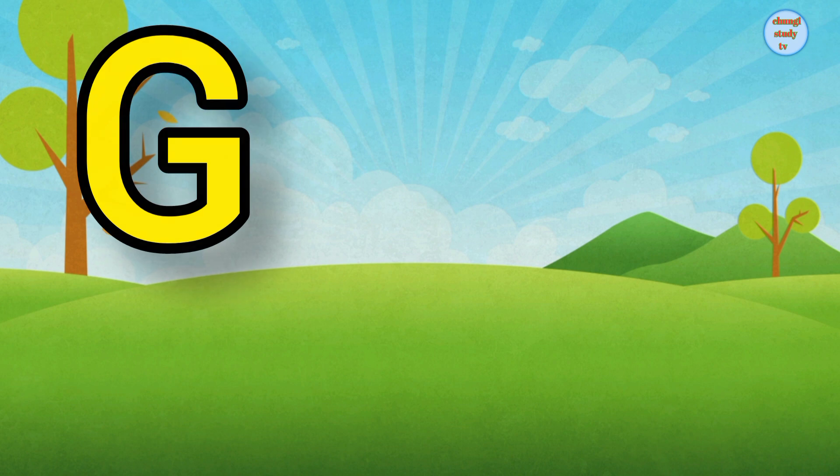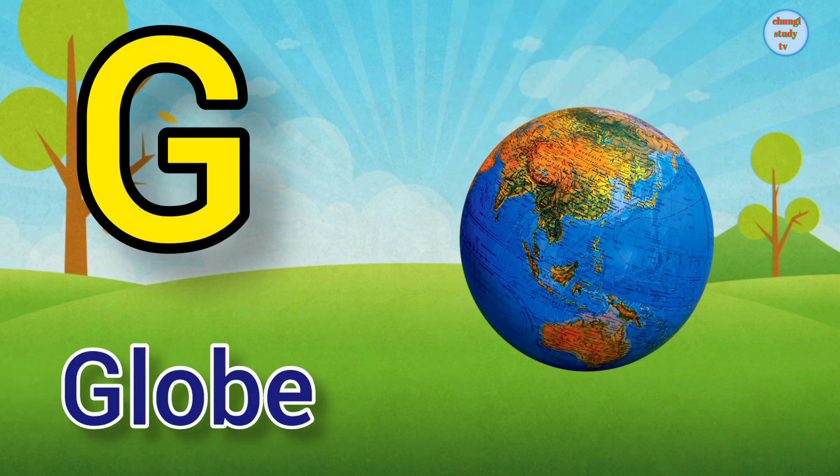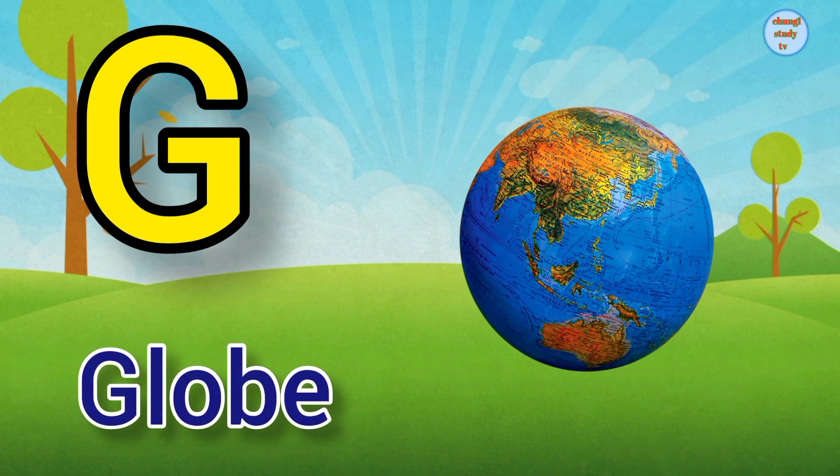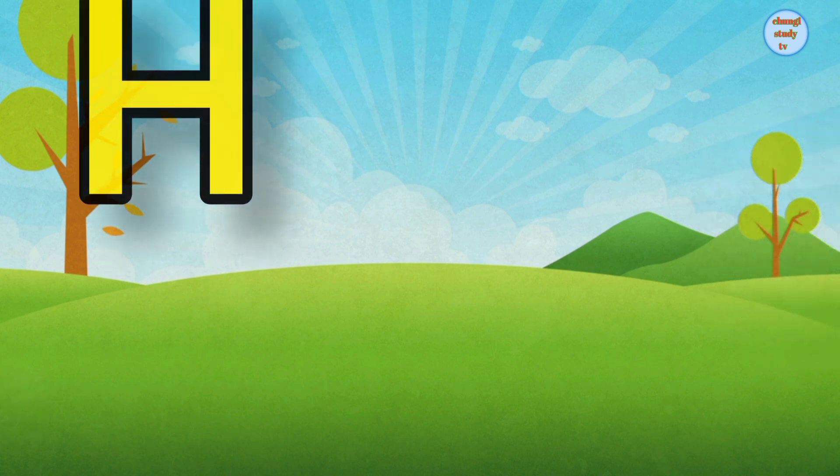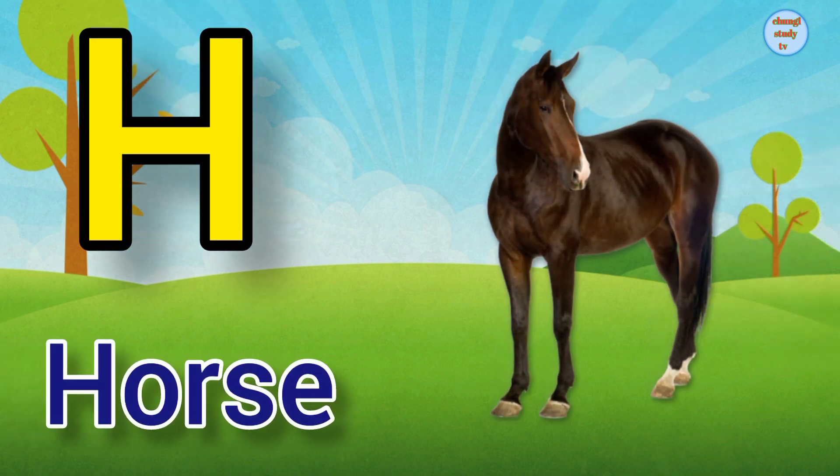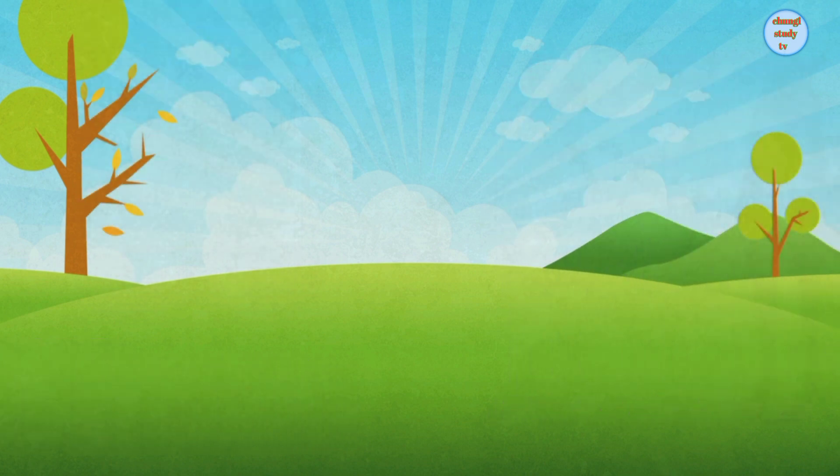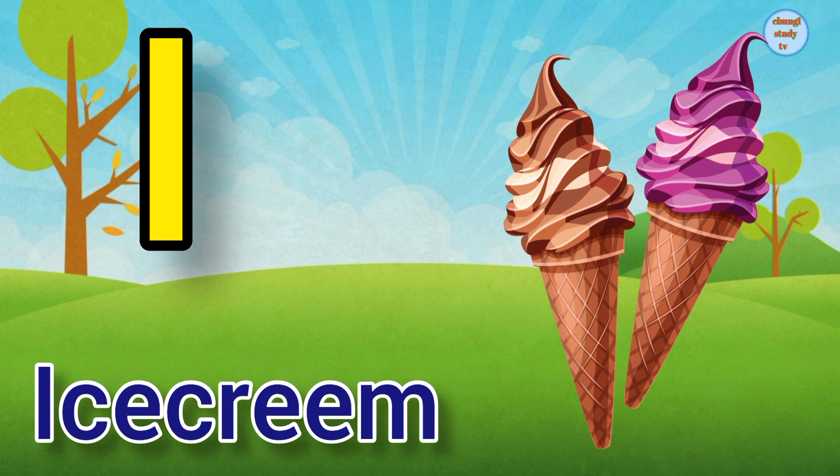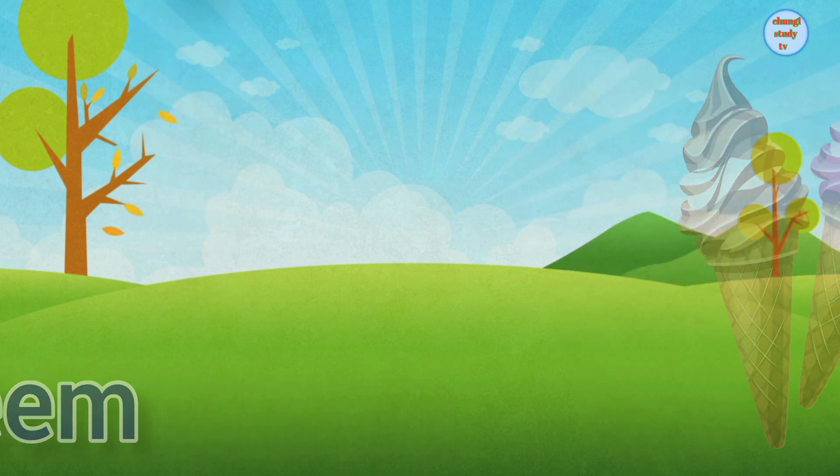G. G for Globe, Globe means manchit. H. H for Horse, Horse means ghoda. I. I for Ice Cream, Ice Cream means ice cream.